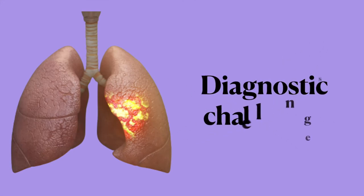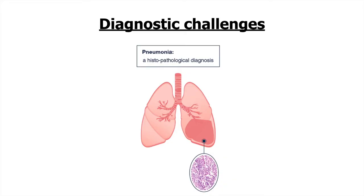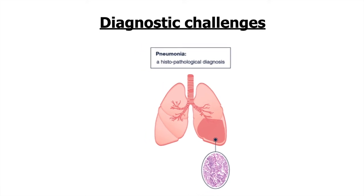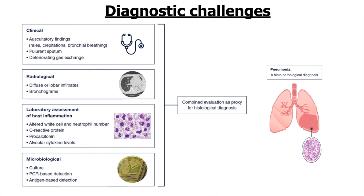The next important area is the diagnostic challenges in identifying VAP. Pneumonia is classically a histopathological diagnosis, but it is clinically impossible to perform histopathological examination in all cases. We rely on clinical, radiological, laboratory, and microbiological surrogates — including auscultatory findings, sputum, deteriorating ventilatory parameters, and radiological findings such as diffuse infiltrates or air bronchograms. Since pneumonia is one of the commonest causes of ARDS, identifying a new infiltrate is extremely difficult and subject to significant variation.